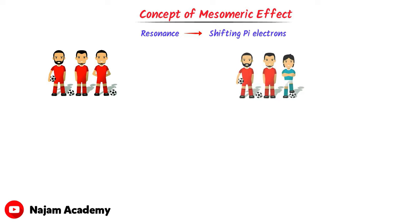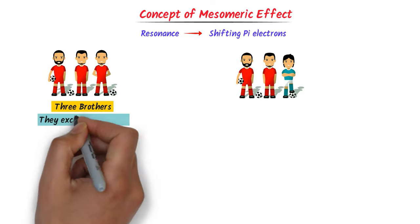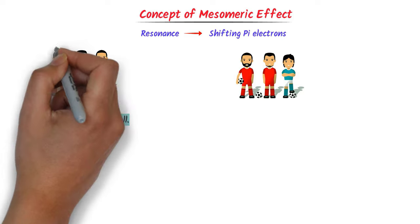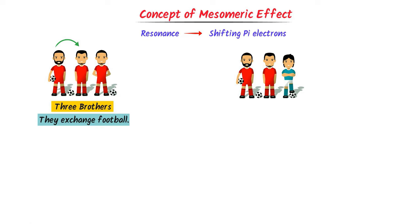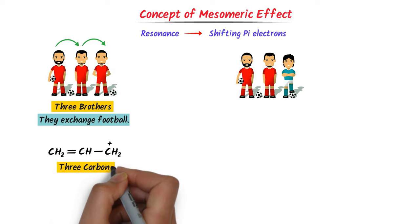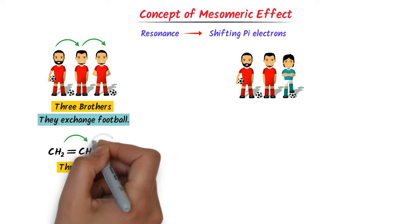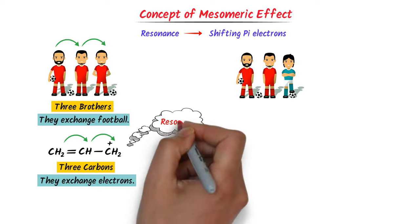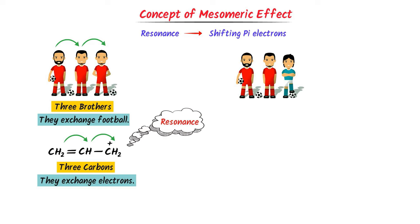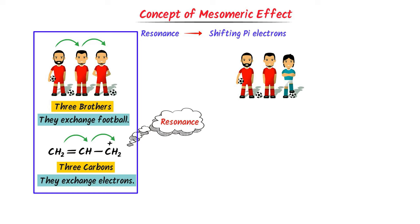Consider these two cases. In the first case, let these three brothers exchange a football — the first brother gives the football to the second one, and the second one gives it to the third one. Similarly, consider this organic compound where the three carbons represent three brothers. There is a possibility of shifting pi electrons in the molecule, hence resonance occurs here. The shifting of the football represents the shifting of pi electrons.